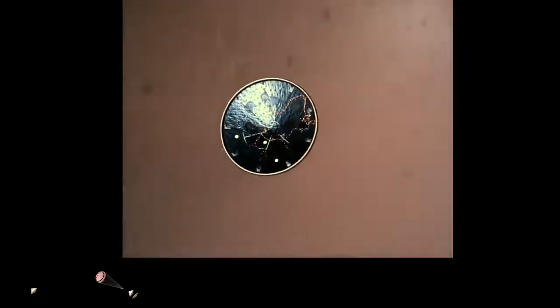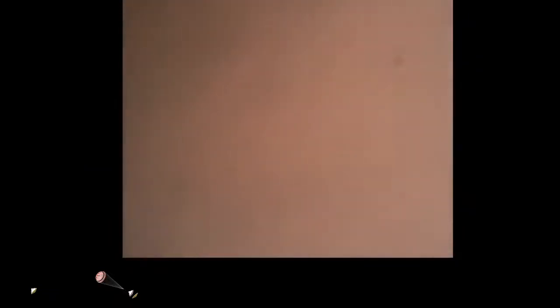Heat shield separated. Perseverance has now slowed to subsonic speeds, and the heat shield has been separated. This allows both the radar and the cameras to get their first look at the surface. Current velocity is 145 meters per second at an altitude of about 9.5 kilometers above the surface.